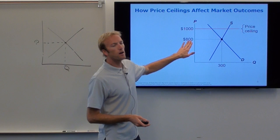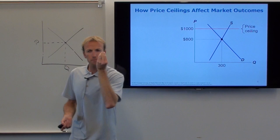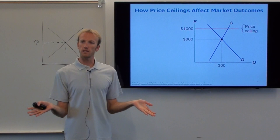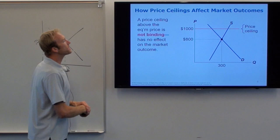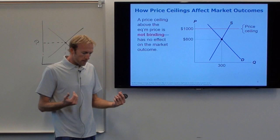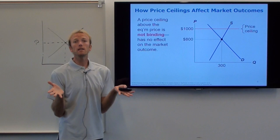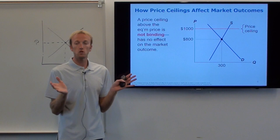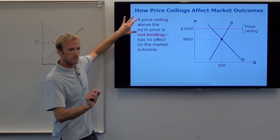Is $800 a legal price? Yes. Is $1,500 a legal price? It's illegal. Now think: how much are the apartments currently being sold for? $800. The government institutes this law, but nobody really cares — they're like, I only want to sell it for $800 anyway, I wasn't going to go over $1,000. So we call this not binding — in other words, it has no effect on the market. If the price ceiling the government institutes is above the equilibrium price, it's useless. We call that not binding.